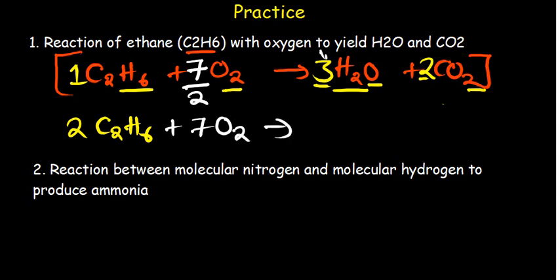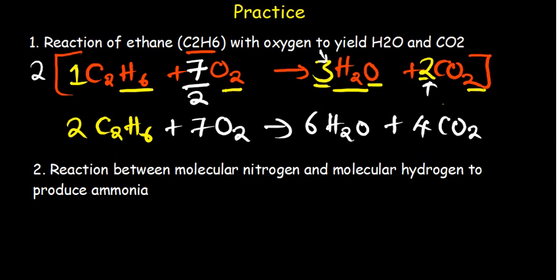Multiplying through by 2: C₂H₆ gets coefficient 2, O₂ keeps coefficient 7 (from 7/2×2), H₂O gets coefficient 6, and CO₂ gets coefficient 4. Verification: carbon — 2×2=4 each side; hydrogen — 2×6=12 each side; oxygen — 7×2=14 on the left, and 6×1+4×2=6+8=14 on the right. The ethane combustion equation is balanced.